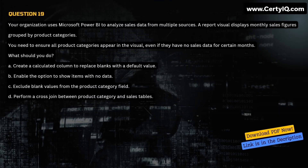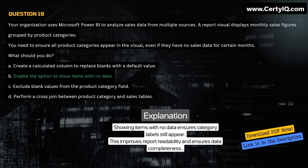Question 19. Your organization uses Microsoft Power BI to analyze sales data from multiple sources. A report visual displays monthly sales figures grouped by product categories. You need to ensure all product categories appear in the visual, even if they have no sales data for certain months. What should you do? A. Create a calculated column to replace blanks with a default value. B. Enable the option to show items with no data. C. Exclude blank values from the product category field. D. Perform a cross-join between product category and sales tables. Correct answer is B. Explanation: Showing items with no data ensures category labels still appear. This improves report readability and ensures data completeness.